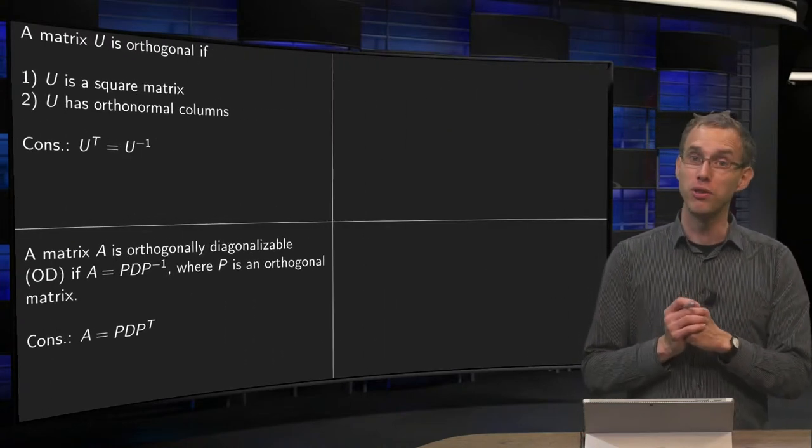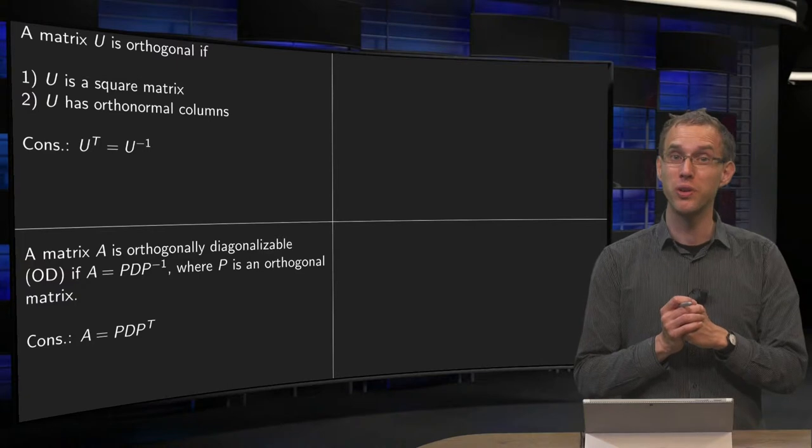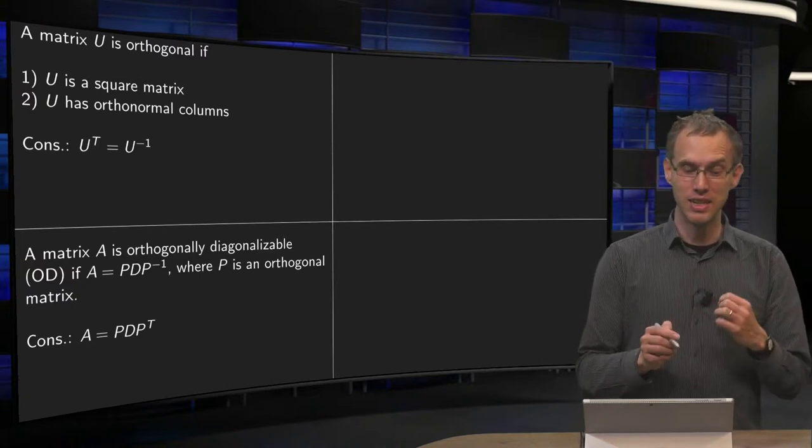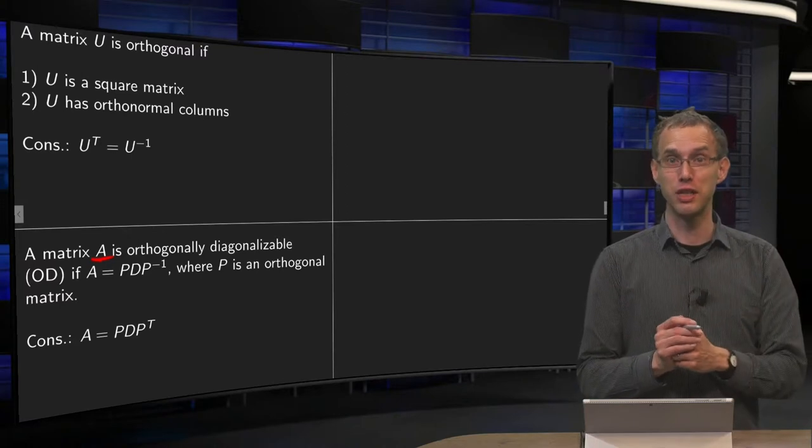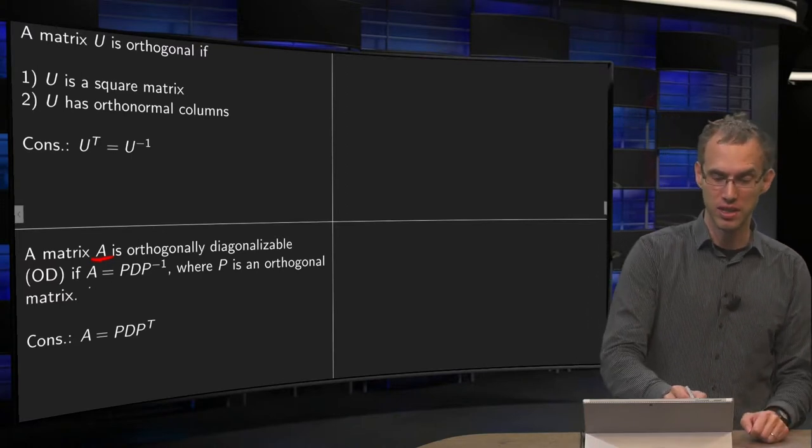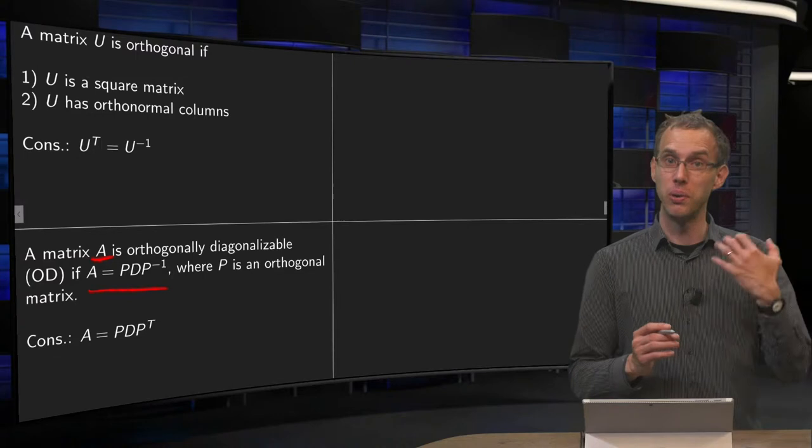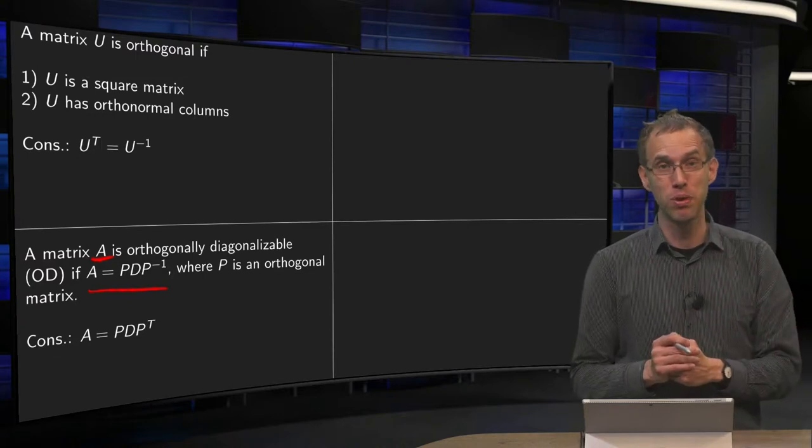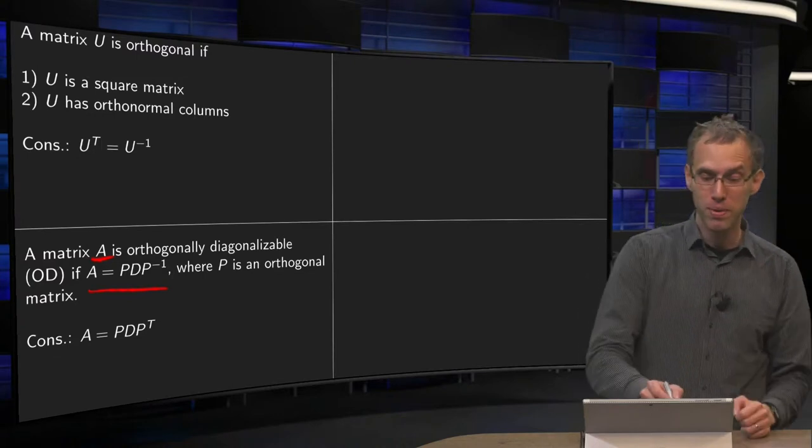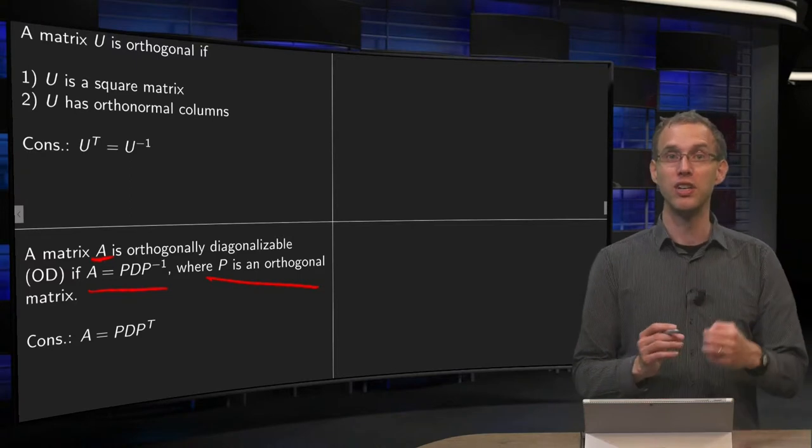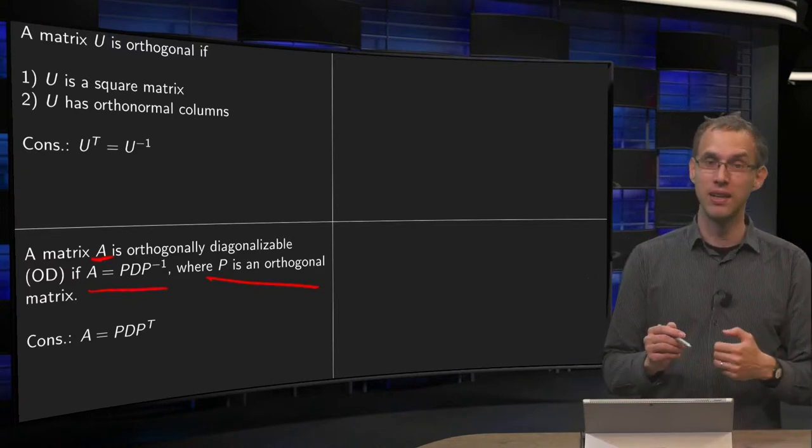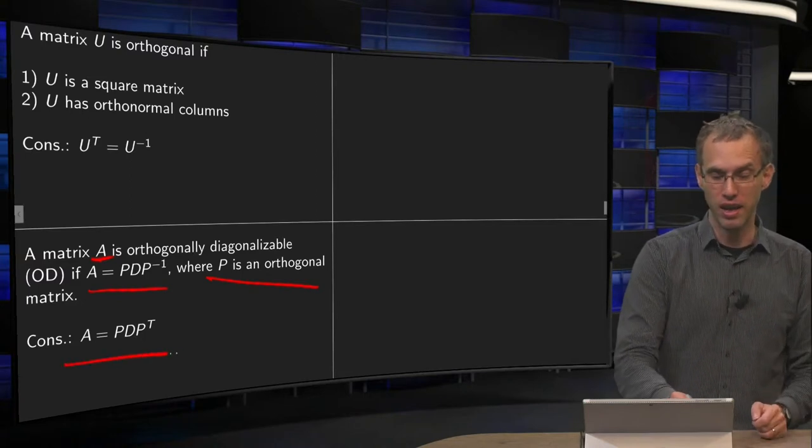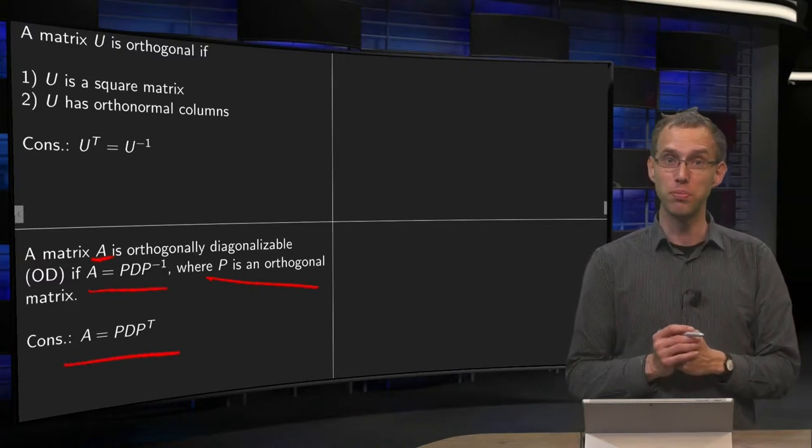Now, moving on to the concept of orthogonal diagonalizability. A matrix A is called orthogonally diagonalizable if you can write A as PDP inverse, so A has to be diagonalizable, but furthermore P has to be an orthogonal matrix. So you have to be able to do this with an orthogonal matrix P. A consequence is of course then that A is equal to PDP transpose.